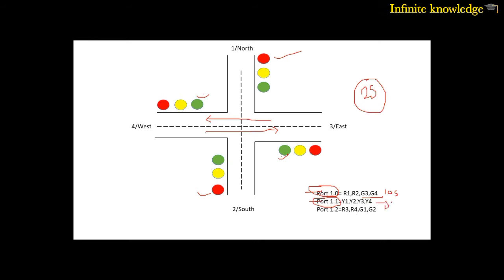Now again, port 1.2 means after 2 seconds, R3 and R4 will glow on. This means now west to east and east to west is not allowed, but G1 and G2 are on, meaning north to south and south to north is allowed. This is also for 10 seconds.